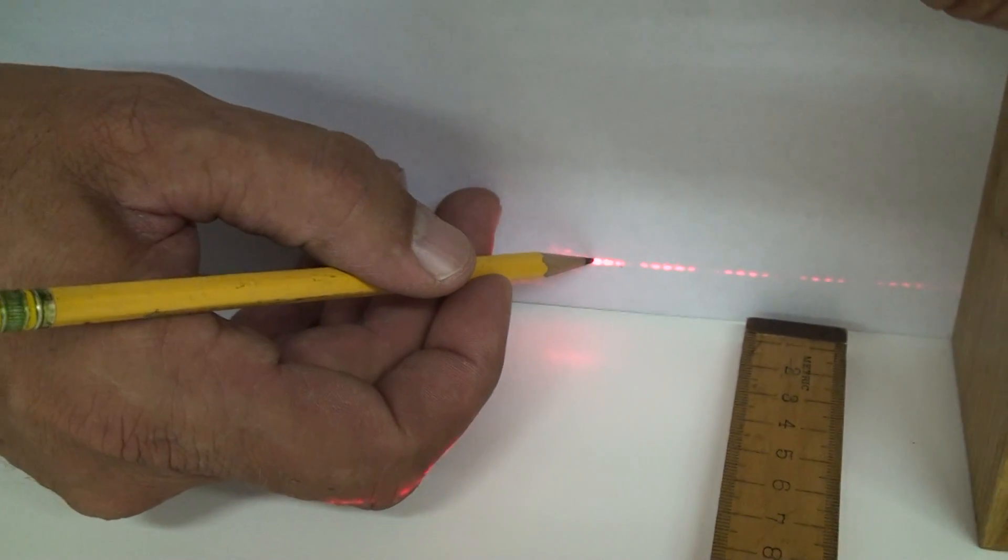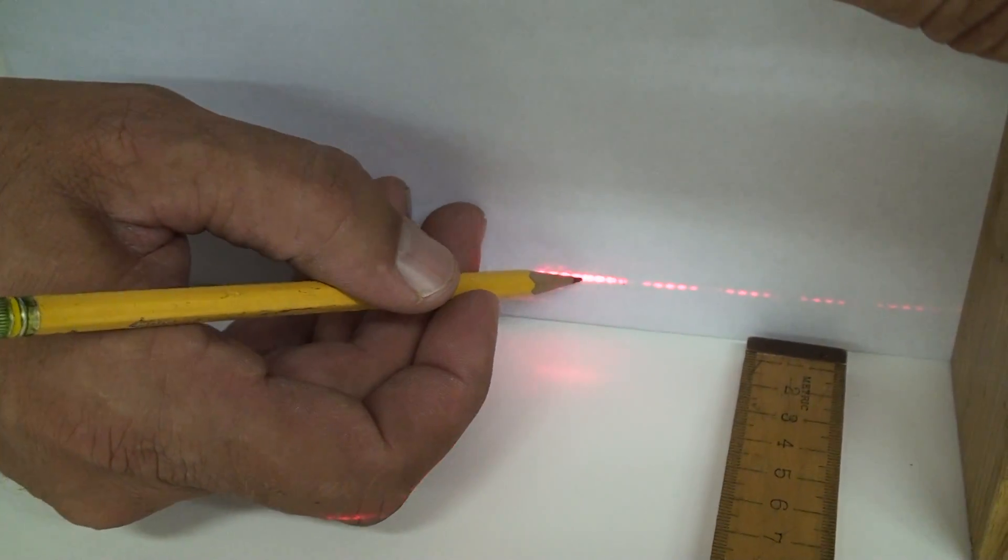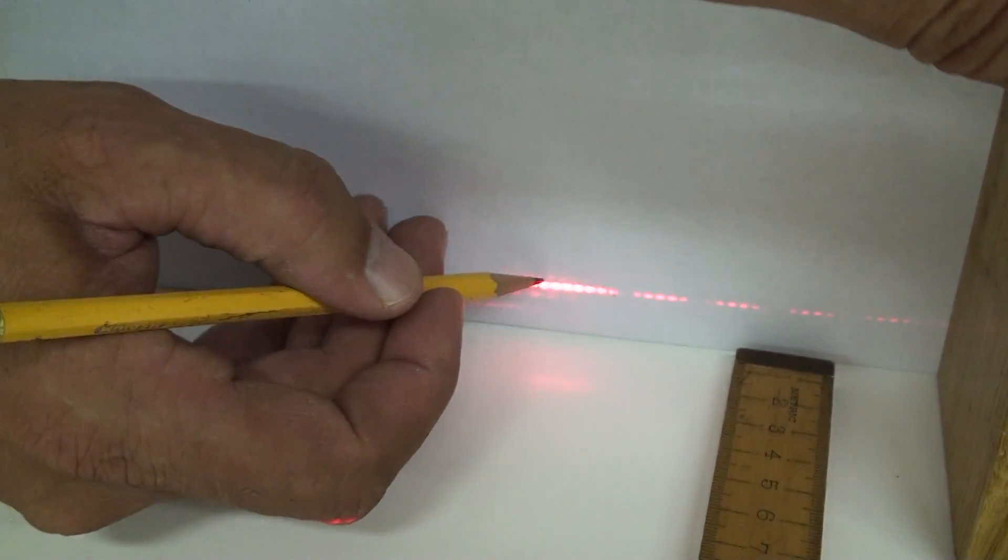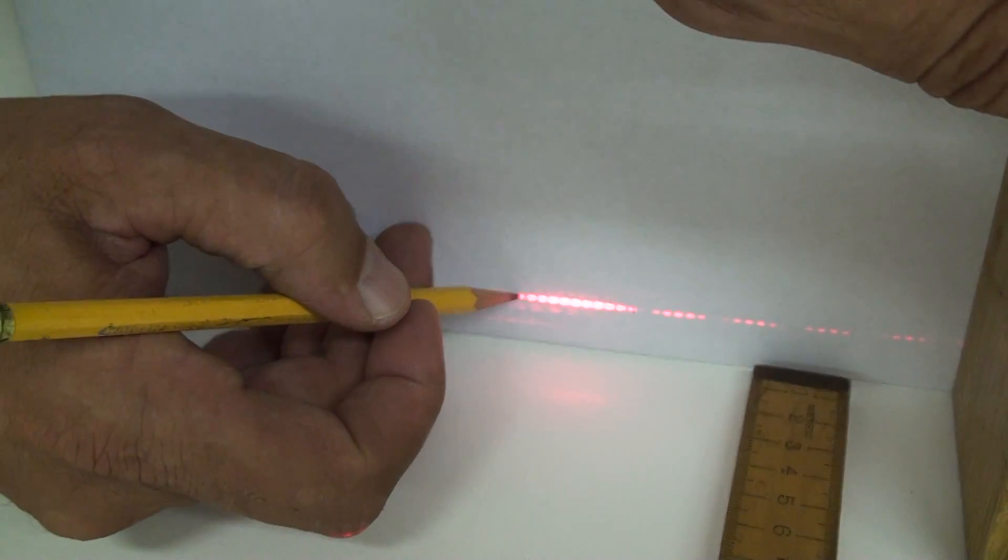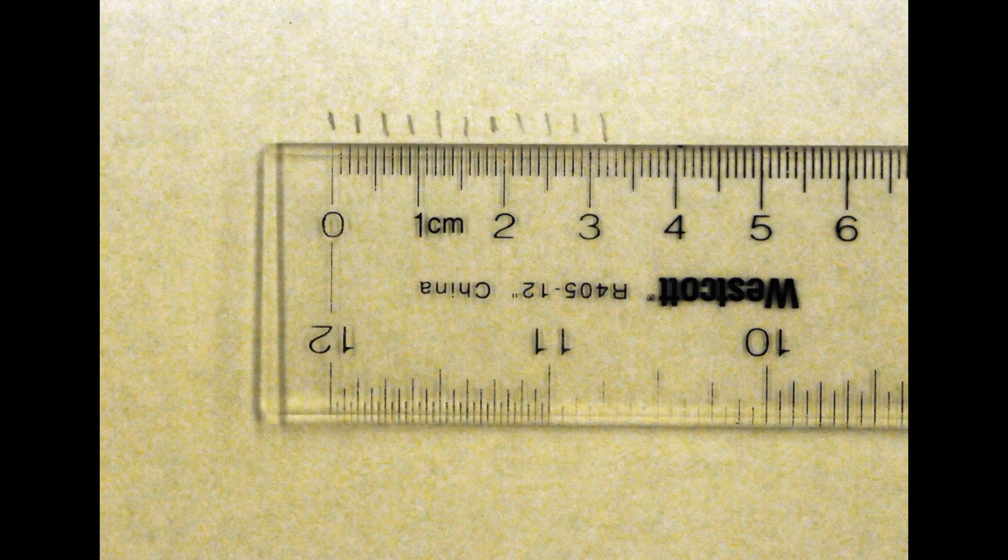The intensity maxima are now closely spaced. Use a pencil to mark the locations of ten adjacent spots. Measure the complete distance and divide by ten to get y.